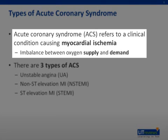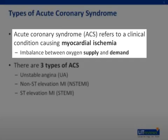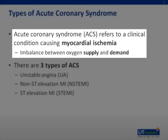Acute coronary syndrome, or ACS, refers to a clinical condition causing myocardial ischemia. These conditions are characterized by an imbalance between myocardial oxygen supply and demand. The most common mechanisms involve a reduction in oxygen supply, most commonly resulting from coronary artery narrowing caused by a thrombus that develops on a disrupted atherosclerotic plaque, leading to decreased blood flow and oxygen supply. Other causes include anemia, hypoxemia, or hypotension.